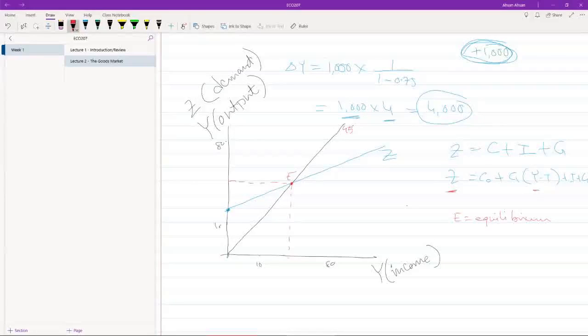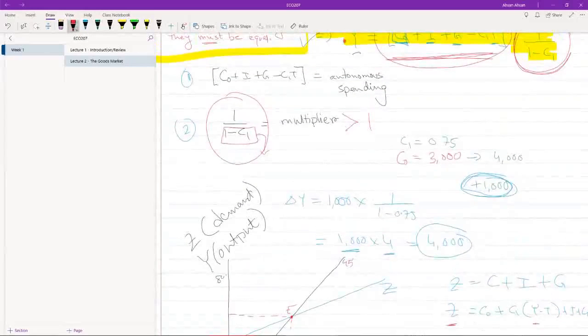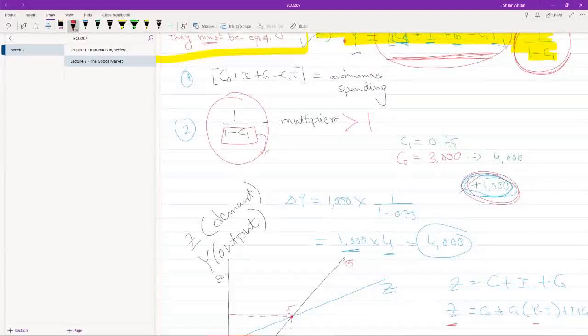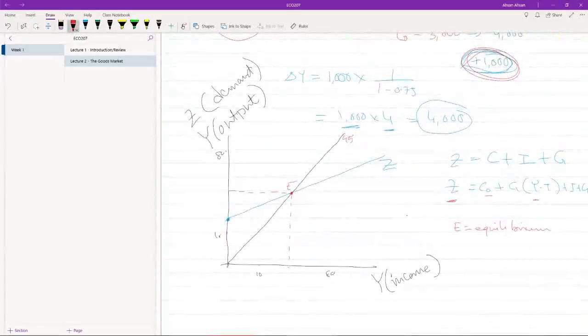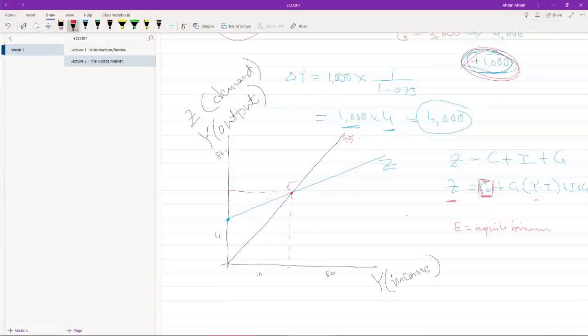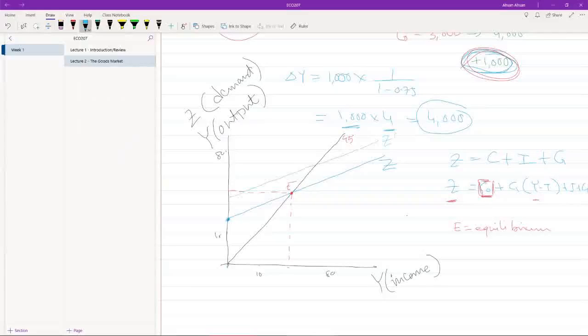Let's go back to the equation. What we had seen - notice here consumption had gone up by a thousand. So in this case, if consumption went up by a thousand, what would happen to the demand curve?